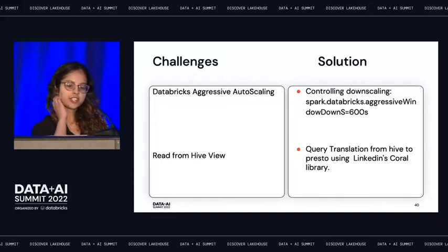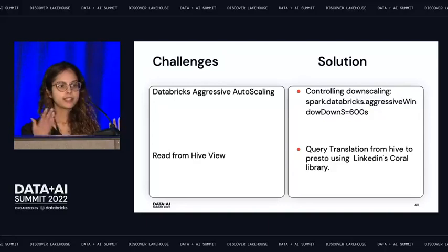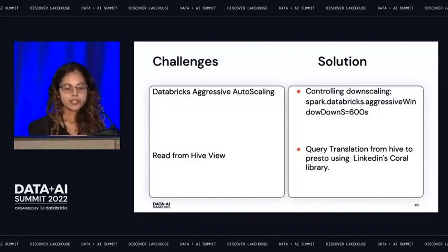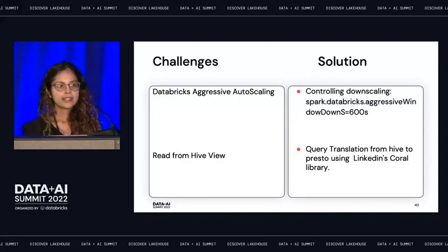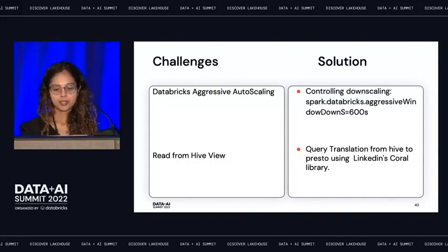Two final challenges: first, if using Databricks autoscaling, by default it does aggressive autoscaling — it was killing down nodes even when executor nodes had shuffle files, causing all kinds of errors. You can apply a specific property to control downscaling, and after that everything has been running well. Second, analysts wanted to read from Hive views, but the Presto on Spark library does not currently support that. We looked at LinkedIn's Coral query translation library, which provides that support, tested it, and plan to contribute it back.